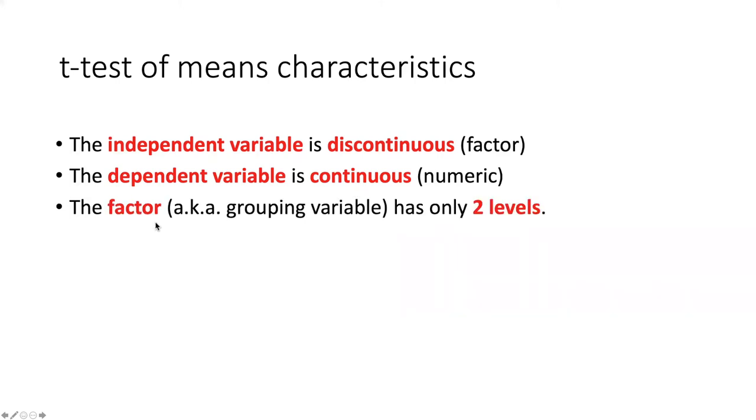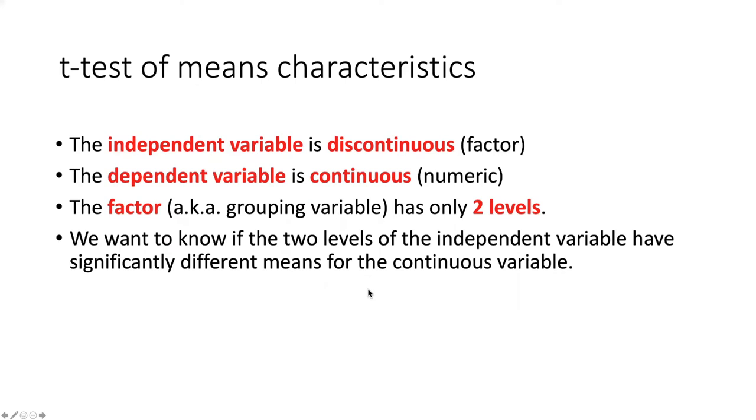That independent variable, which is a factor or grouping variable, can only have two levels in a t-test of means. What we want to find out using the t-test of means is whether the two levels of the independent variable have significantly different means for the continuous variable that we're measuring.